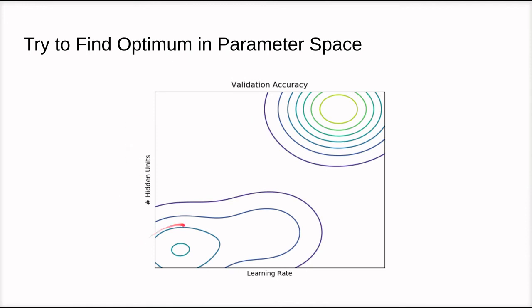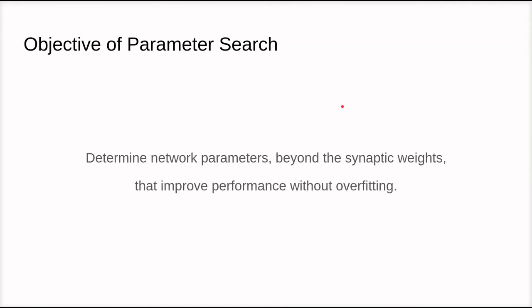And what we really want to do is, coming into a problem, we don't know what this surface looks like. And we want to find the point in this space, in this case it's somewhere up here, that's the maximum validation accuracy. And so our job is to find settings for these parameters that maximize this validation accuracy.